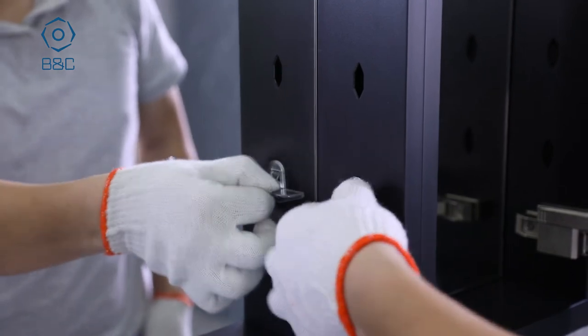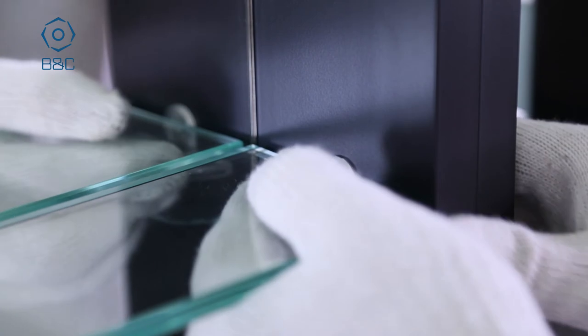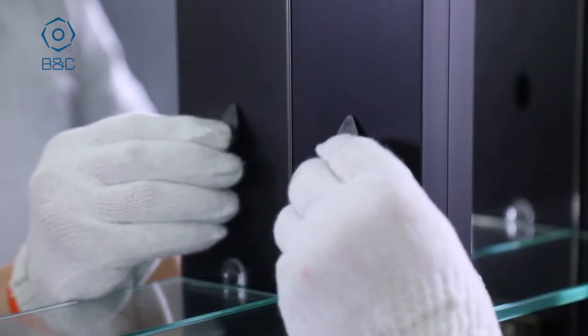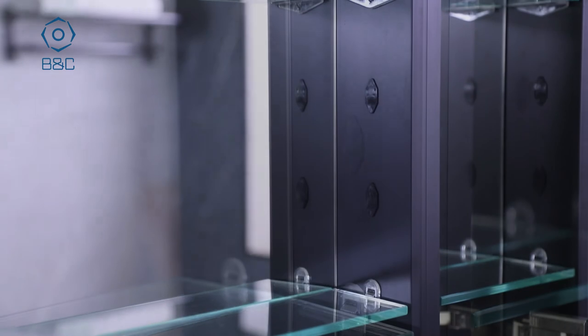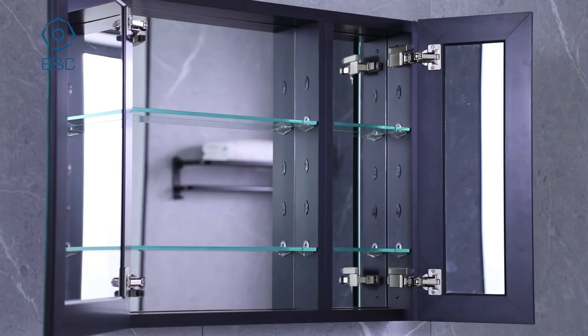Insert clear shelf clips into the holes and place glass shelves on them. Fill the rest of shelf clip holes with covers. Lastly, install cover plates on both cabinet sides.